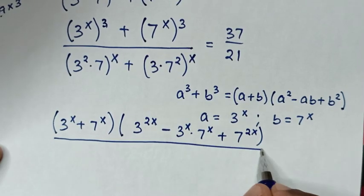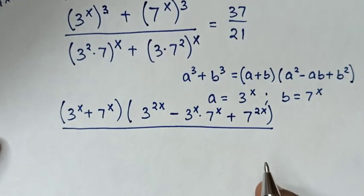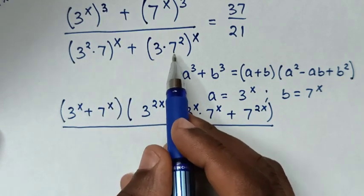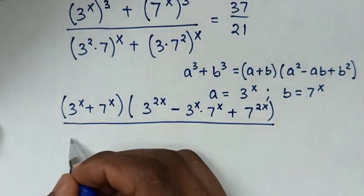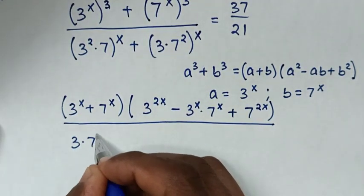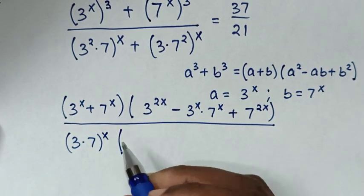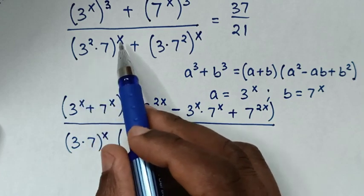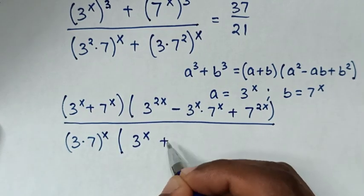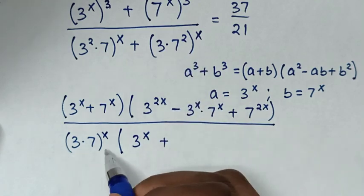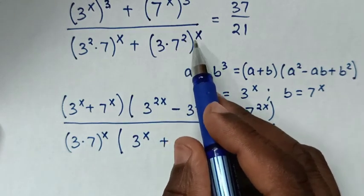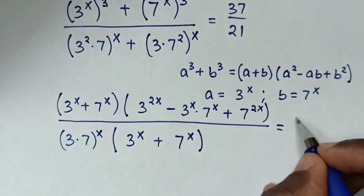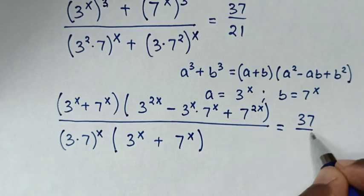Over. From the denominator, we have 3 times 7, bracket power of x. 3 times 7, bracket power of x, is common, so we take (3 times 7)^x out of the bracket. Then from 3 squared, this divided by this gives 3^x, then plus from 7 squared, this divided by this gives 7^x. Then bracket is equal to 37 over 21.